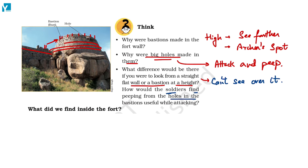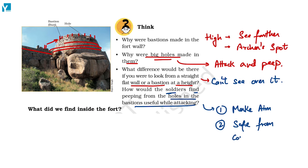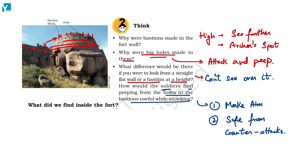How would soldiers find peeping from the holes in bastions useful while attacking? They could make their aim perfect by peeping through these holes and remain safe from counter-attacks, since it would be only a lucky shot to put an arrow through a small hole. This is how a bastion can help an army.